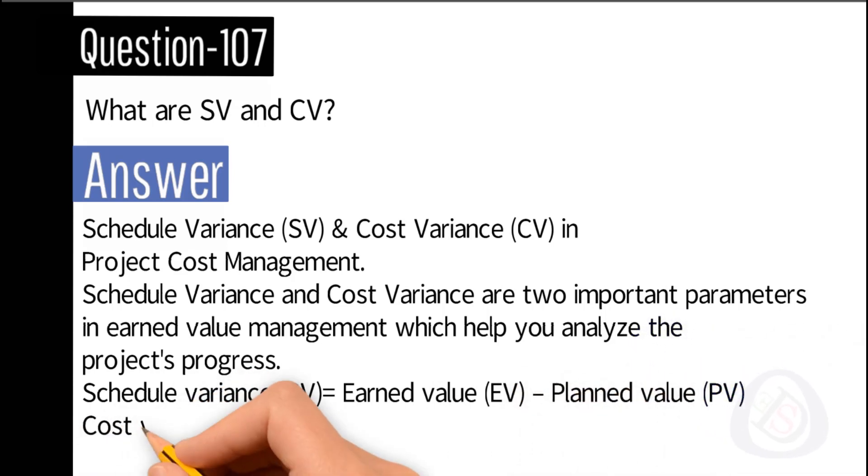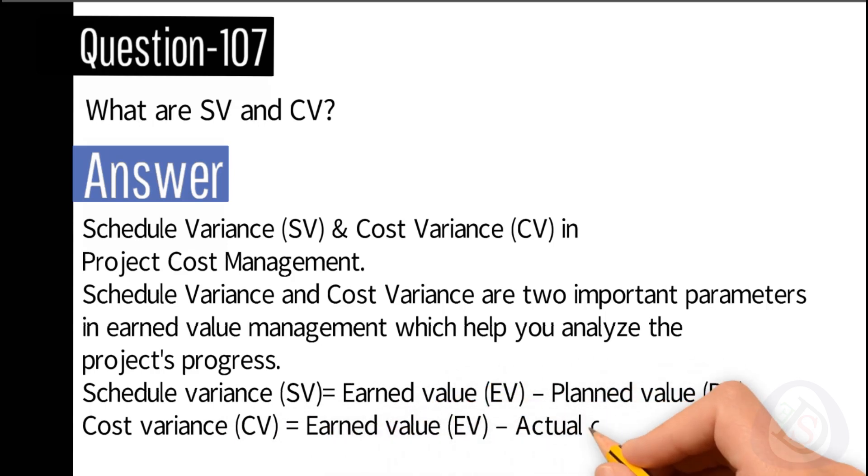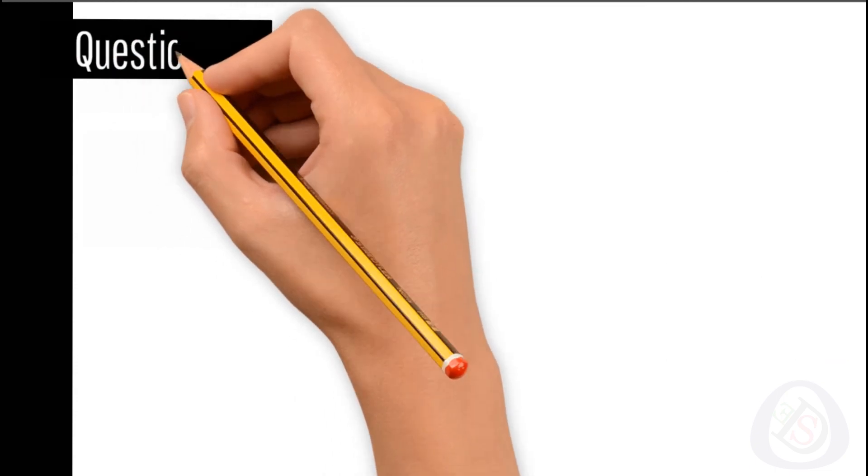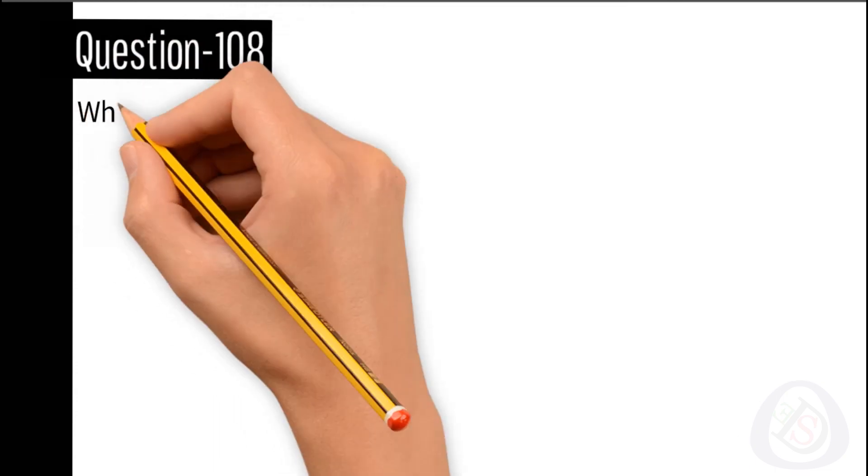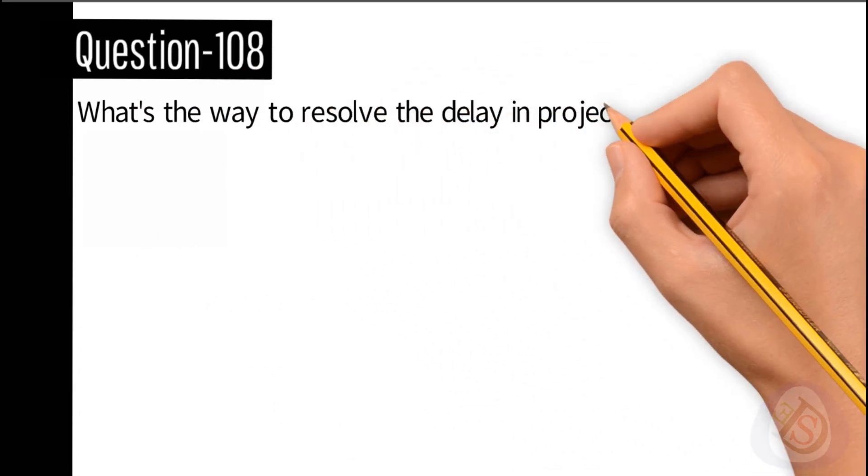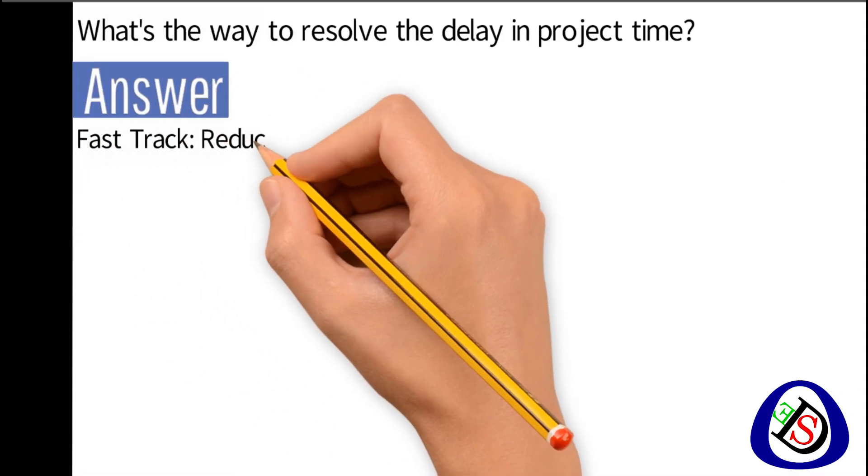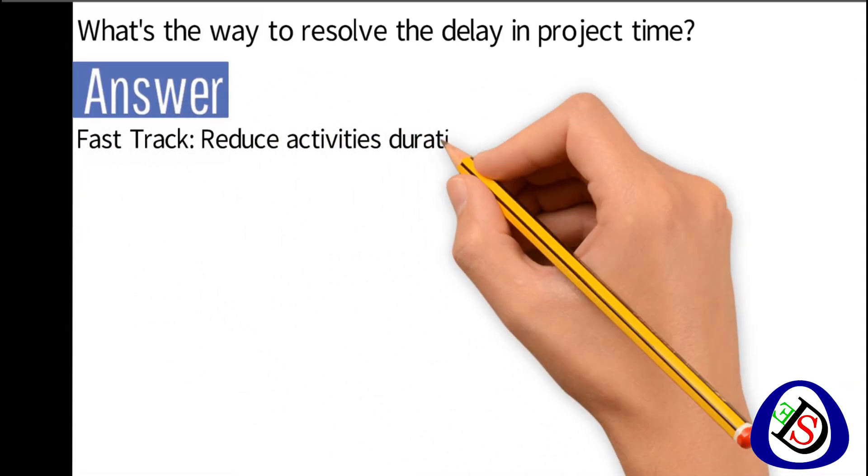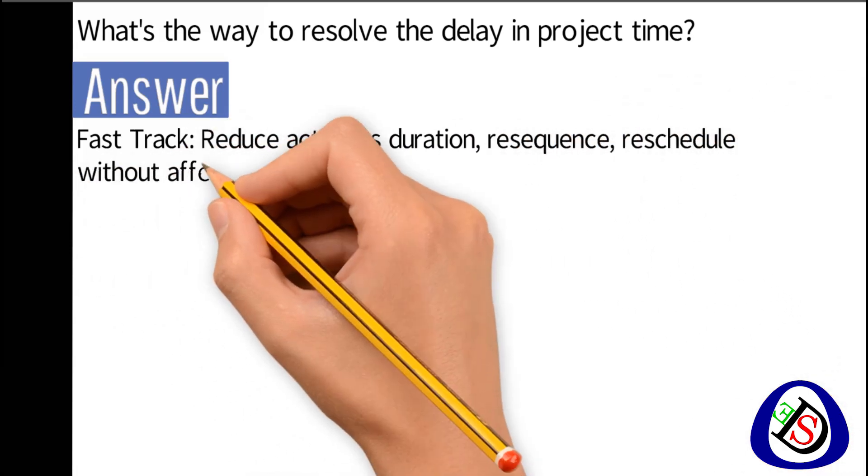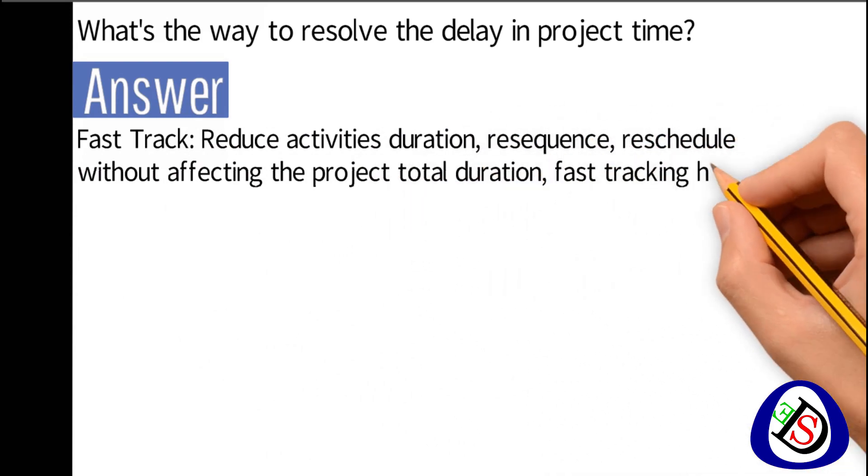Question number 108: What's the way to resolve the delay in project time? Answer: One, fast track - reduce activities duration, re-sequence, reschedule without affecting the project total duration. Fast tracking has a problem regarding quality issues if it is applied in the wrong way.